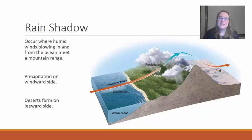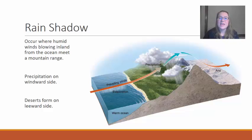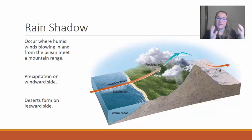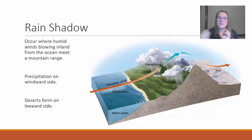We can find these rain shadows particularly on the western part of the United States, and this is what causes there to be lush vegetation on the California side of the mountains and deserts in Nevada.